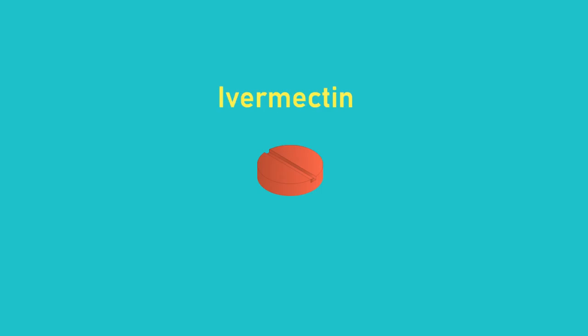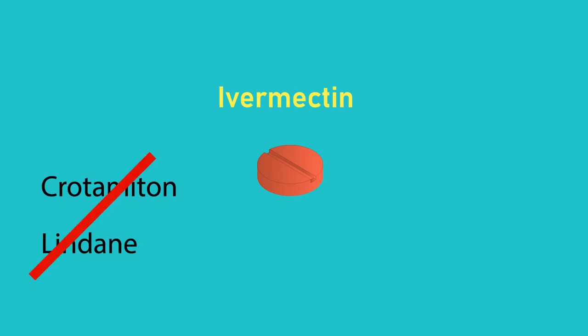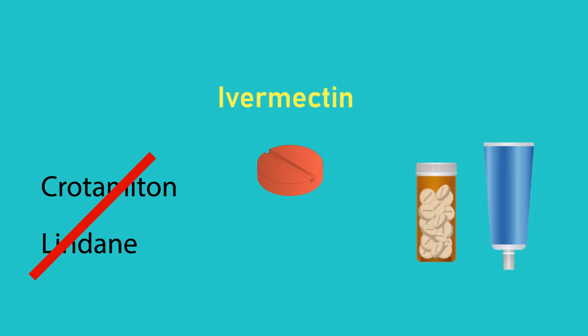While Permethrin is commonly prescribed for topical application, oral medication like Ivermectin is sometimes preferred. Other medications acting against mites, like Crotamiton and Lindane, are not used as much. Along with medications that kill mites, drugs for relief of itching or treating secondary bacterial infections are also prescribed as needed. It takes a few days for the itching to go away even after killing the mites.